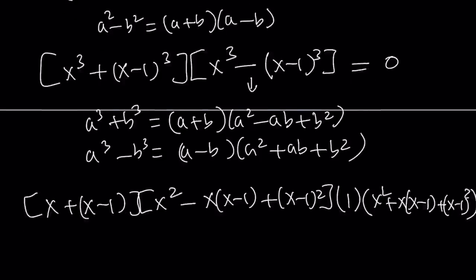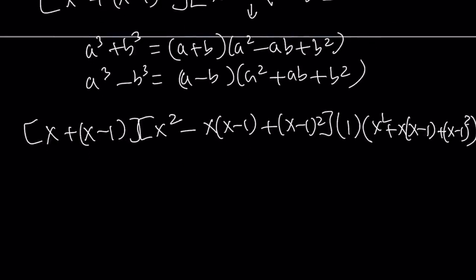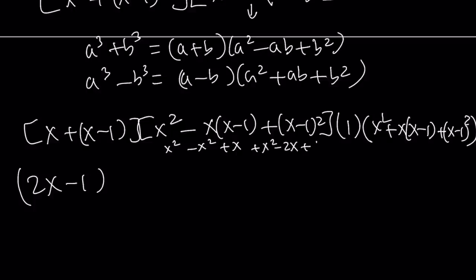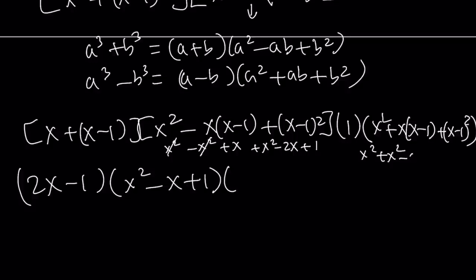The whole thing is equal to zero. Let's go ahead and simplify this a little bit. This is going to be 2x minus 1. This expression gives us x squared minus x squared plus x plus x squared minus 2x plus 1, so the x squared cancels out and we end up with x squared minus x plus 1. The last one simplifies as x squared plus x squared minus x plus x squared minus 2x plus 1, giving us 3x squared minus 3x plus 1. And the whole thing is equal to zero.